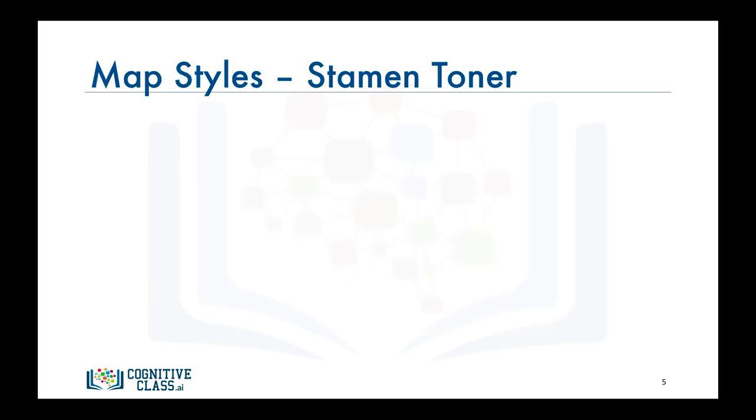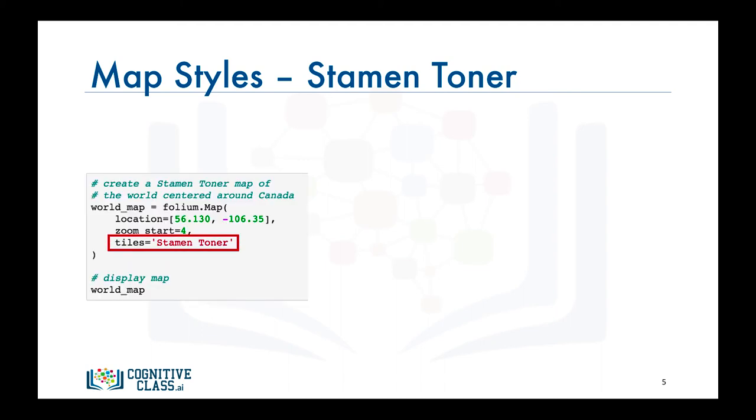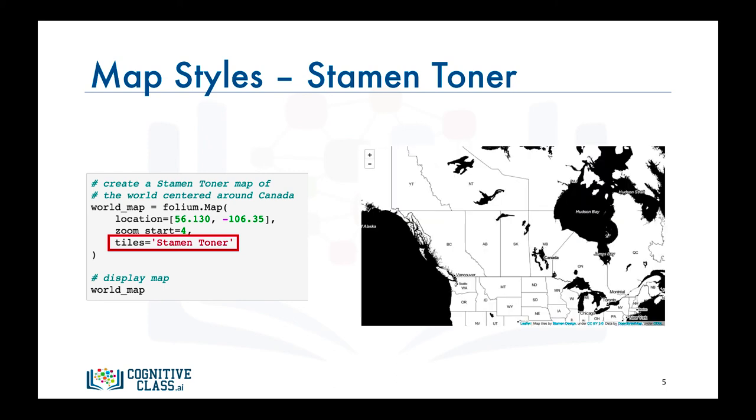Another amazing feature of Folium is that you can create different map styles using the tiles parameter. Let's create a stamen toner map of Canada. This style is great for visualizing and exploring river meanders and coastal zones.